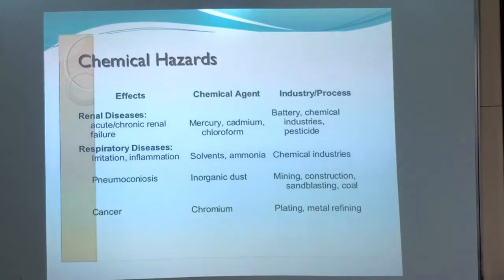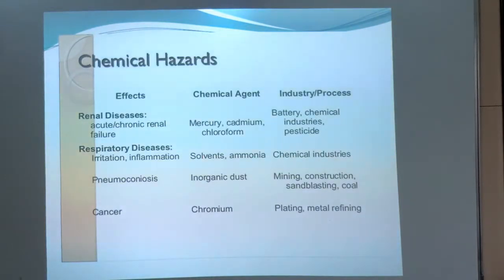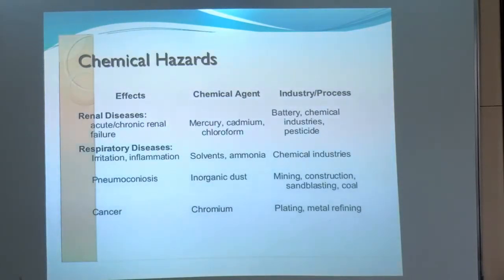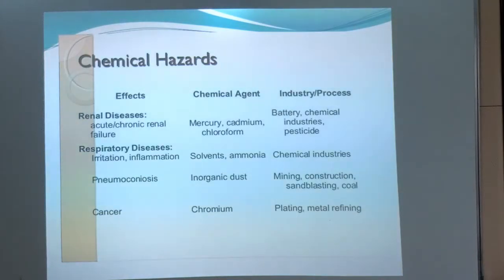Another important group is chemical hazards. The effects of chemical hazards are organ specific — chemicals have affinity for particular organs. Renal diseases such as acute and chronic renal failure are caused by compounds like mercury, cadmium, and chloroform used in battery, chemical, and pesticide industries. Respiratory diseases, including irritation, inflammation, and pneumoconiosis, are caused by solvents, ammonia, inorganic dust, and organic dust, in chemical, mining, construction, sandblasting, and coal industries.